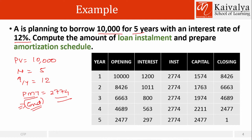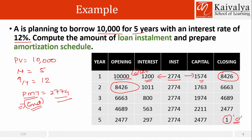Now let us understand how to prepare the loan amortization schedule in the traditional manner. We have taken annual, not monthly payments here. In the first year, the opening balance is 10,000 on which interest is calculated at 12%, making it 1,200. The installment amount is 2,774, which breaks down into an interest component and a capital component. From 2,774, reducing the interest gives the capital component. After payment of the first installment, the loan outstanding becomes the opening balance for the second installment. Since we are dealing with decimals there is a small balance remaining, but practically with a financial calculator it should be 0.